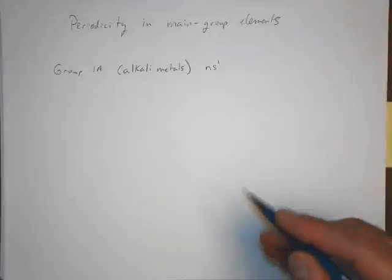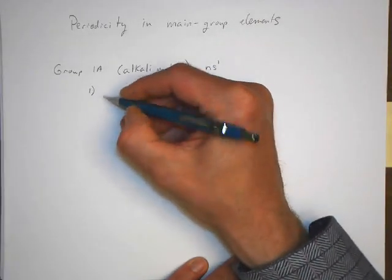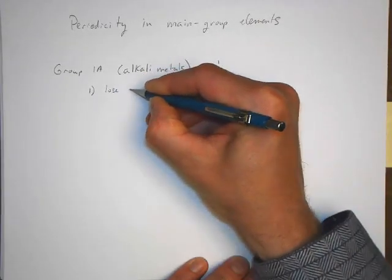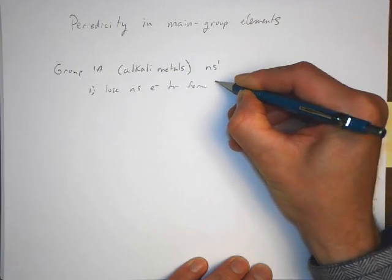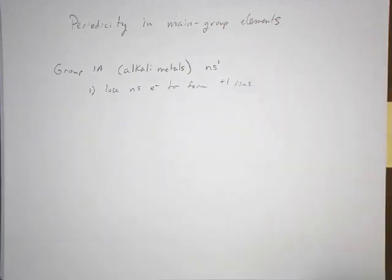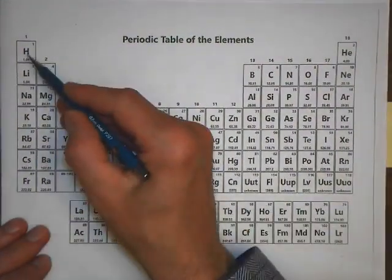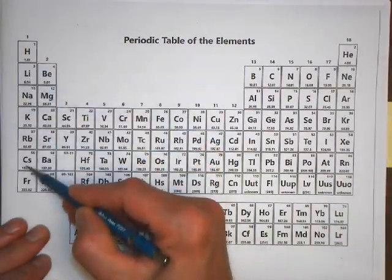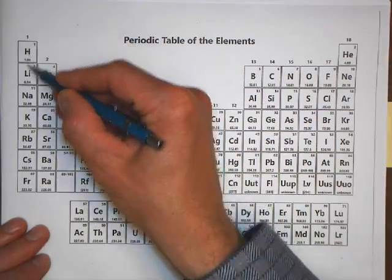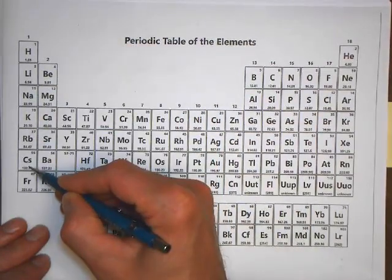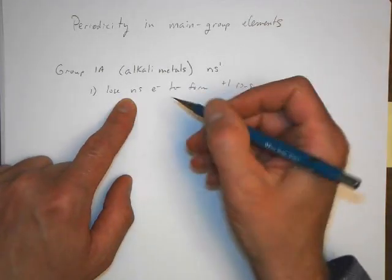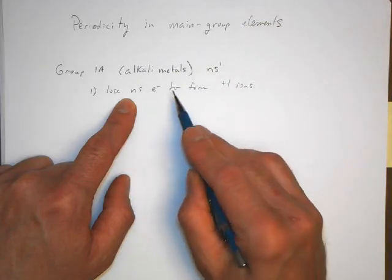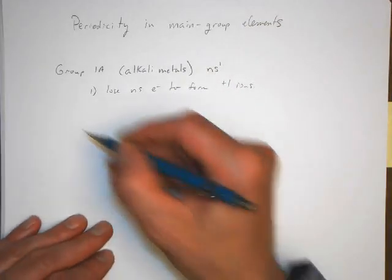What they do is they lose an n s electron to form plus one ions. And then they react with non-metals. This is why this entire group, when we memorized it as being a trend in the periodic table, forms plus one ions. The reason is because they lose one electron to form a plus one ion.